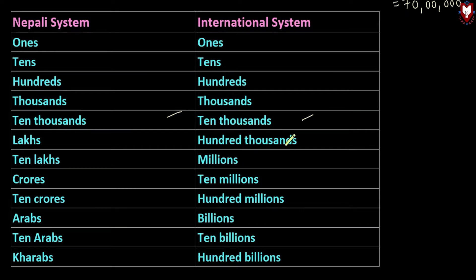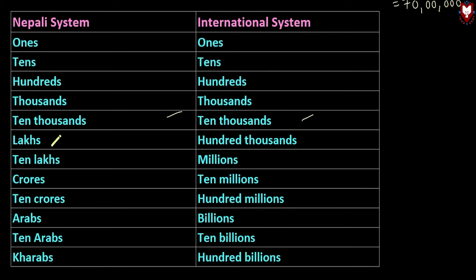In the international system: 100,000 is called one hundred thousand; then we have millions, 10 millions, 100 millions, then billions, 10 billions, and 100 billions. So that means 1,000 is thousands and 100,000 is one hundred thousand.